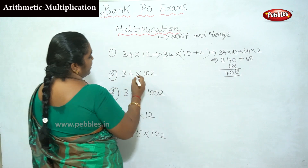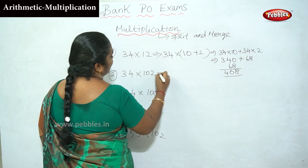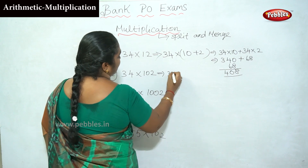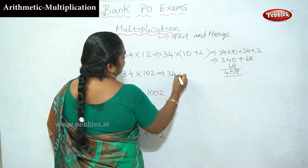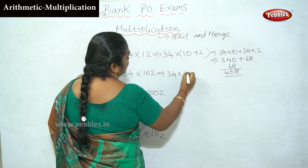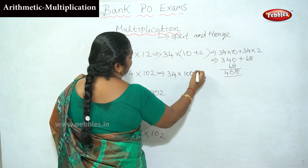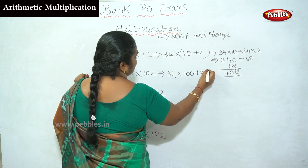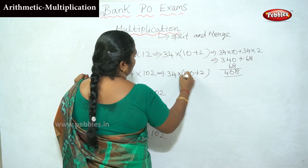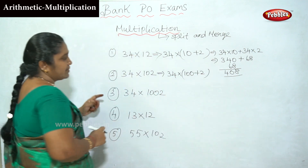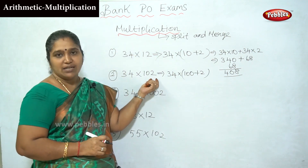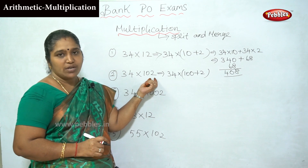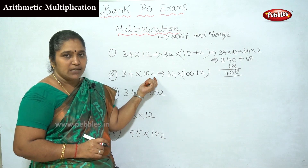Now, 34 into 102. You can split this as 34 into 100 plus 2. There is 102, which equals 100 plus 2.